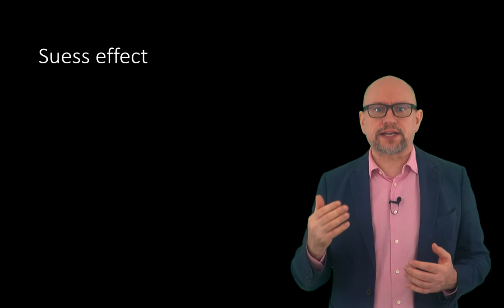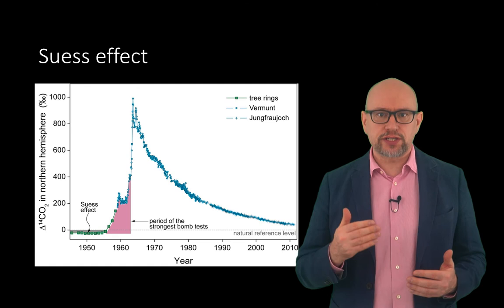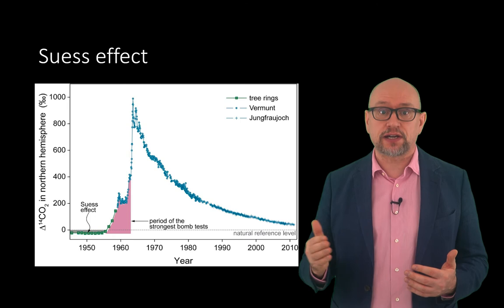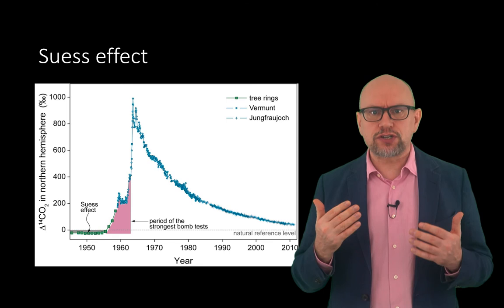More recently, the Suess effect has been used to argue that the rise in carbon dioxide in the atmosphere is due to burning fossil fuels. This figure shows the per mil change in carbon-14-containing atmospheric carbon dioxide since the end of the Second World War. The small dilution of carbon-14 in the shaded green area is the effect postulated by Suess.